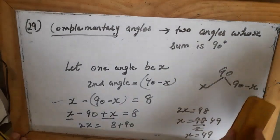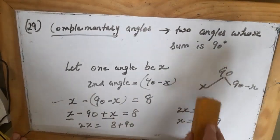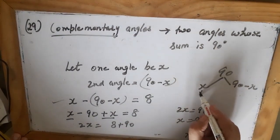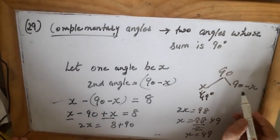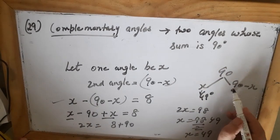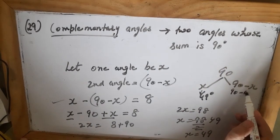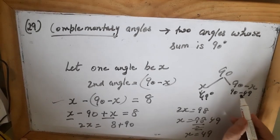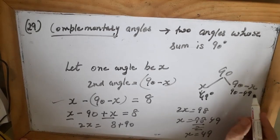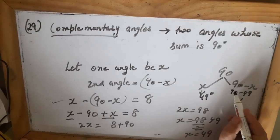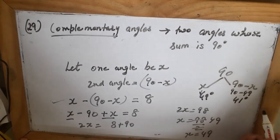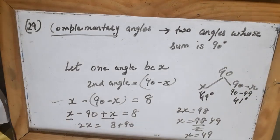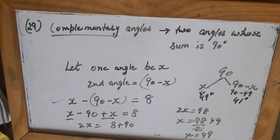So x equals 49, meaning one angle is 49 degrees. The other angle is 90 minus 49 equals 41 degrees.